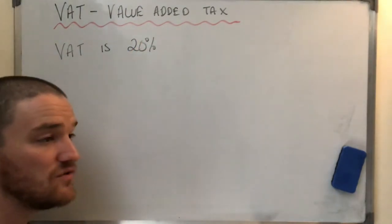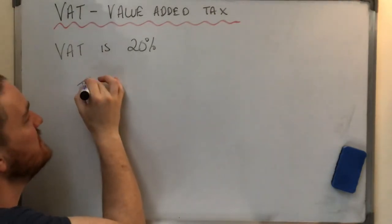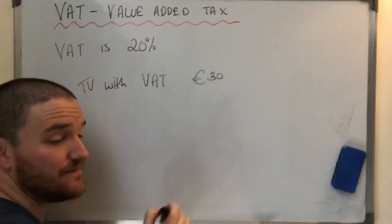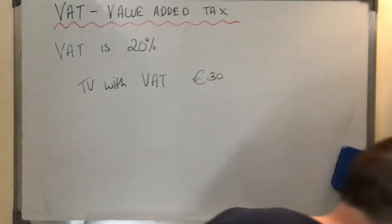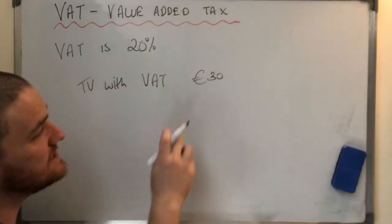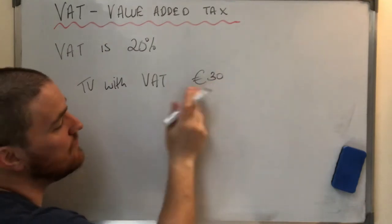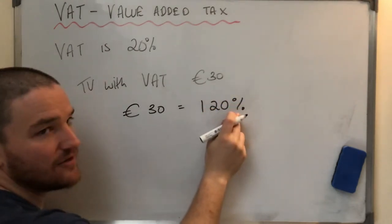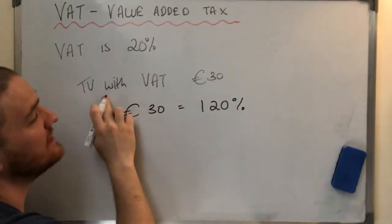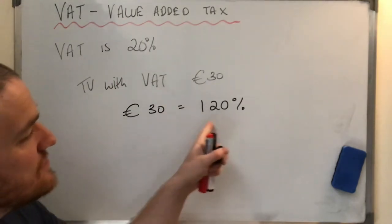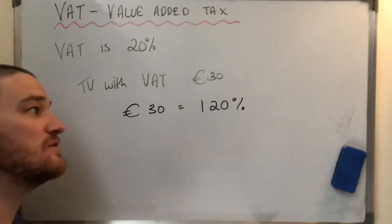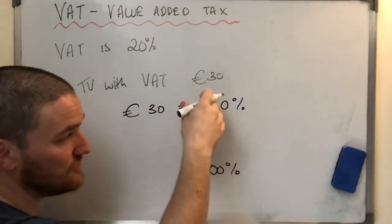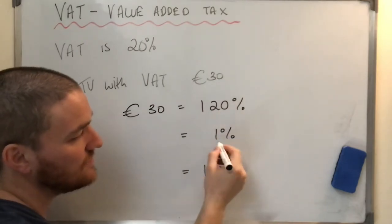Now we're going to take a new scenario and I'll say now that VAT is 20% just for this one. So VAT is 20%. Okay. So I'm going to say that I sold a TV with VAT. So TV sold with VAT, and I sold it for €30. So now the important part of this question is to establish what does the €30 refer to as a percent. So this is including the VAT. So the €30 is going to be not 100%, but 120%. Okay. Because that's including the VAT.